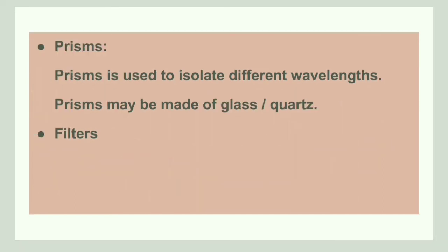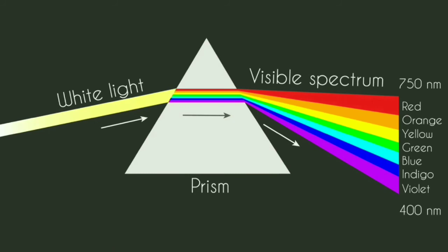As discussed, a monochromator such as a prism produces different wavelengths. This diagram shows a prism acting as a monochromator. When white light falls on the prism, different wavelengths are produced — that is, the visible spectrum is obtained when white light falls on the prism.